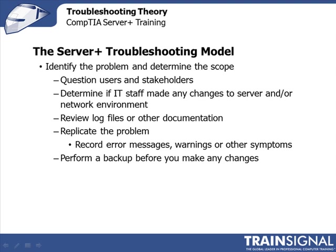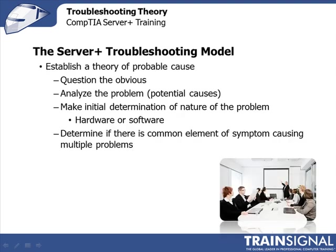The last step in the identification stage is to perform a backup before you make any changes. This will allow you an easy rollback in case something goes wrong. Now that we have gone through all the steps to help us identify the problem, it's time to establish a theory of probable cause.